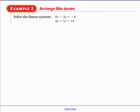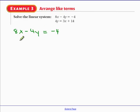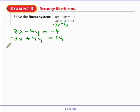Here is our last example. What's wrong with it right now is that the x's and y's are not aligned. You can rearrange the second equation to make it look like x's, then y's, then equals a number. Moving the x's to the left by subtracting 3x gives: negative 3x plus 4y = 14. Now you can see the y's can be eliminated — there's negative 4y and positive 4y.